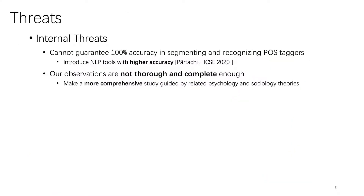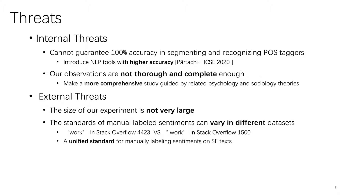Next, we will talk about some possible threats to the validity of our experiments. First, internal threats: a possible threat is that we cannot guarantee 100% accuracy in segmenting and recognizing POS tags. To solve this, we may introduce NLP tools specified for SE texts, handling both natural language and code snippets in the future. Another possible threat is that our observation on SE texts is not thorough enough, and we need a more comprehensive study guided by related social theories. Second, external threats: the size of our experiment is not large, but we still consider our findings relevant because we use four widely studied datasets. We also find that the standards of manually labeled sentiments can vary across datasets. For example, Stack Overflow 4423 views the word 'work' as positive when it means something is effective, whereas Stack Overflow 1500 often views these words as neutral. We suggest that the SE community agree on unified standards for manually labeling sentiments in SE texts.